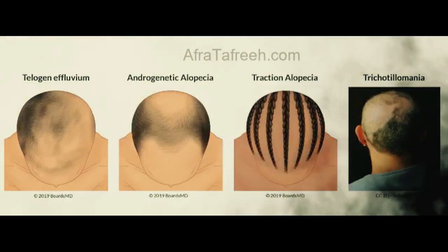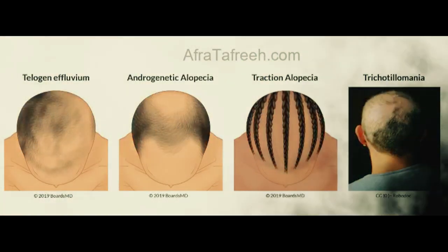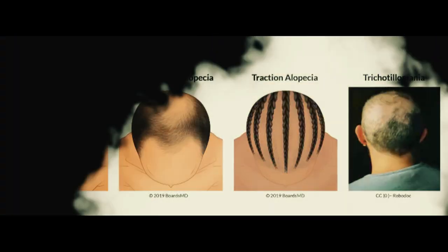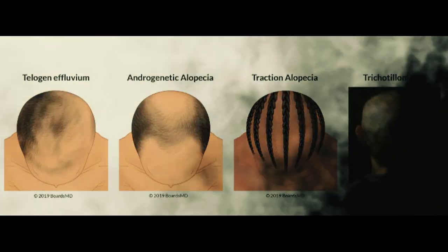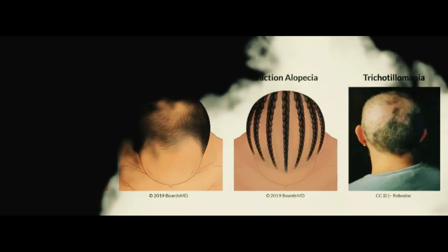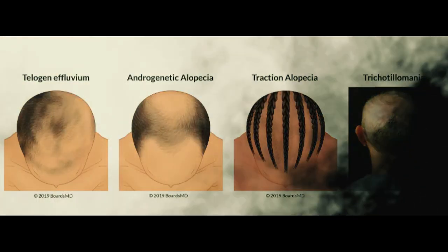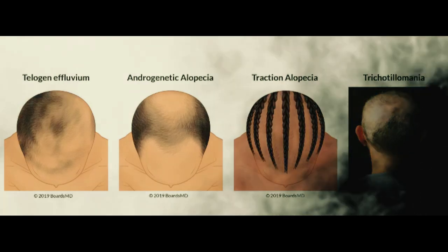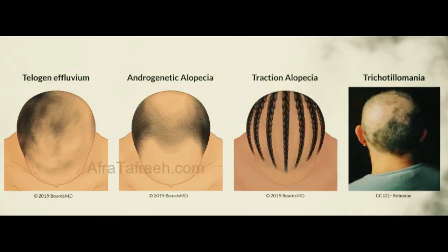In part one of our alopecia video series, we covered the three components of the physical exam that are essential in evaluating our patients with alopecia. If you need a review of the scalp examination, hair pull test, or tug test, I highly recommend you revisit part one of this video series. If you've mastered that physical exam, let's delve into the first condition we present in this part two of our video series.